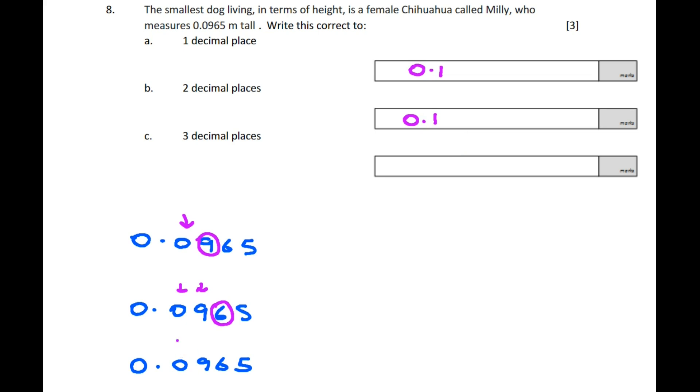Three decimal places: we're looking at the five. Is it five or above? Yes, so it rounds the six up to seven. Therefore, we get 0.097.